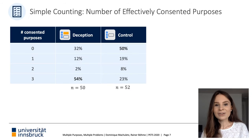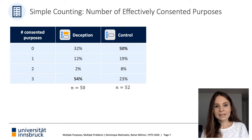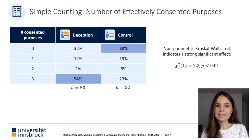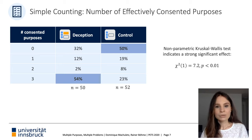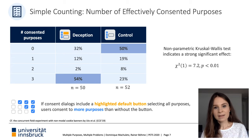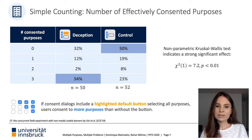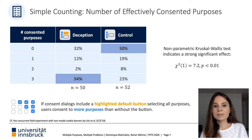For measurements, we counted the number of consented purposes and assigned a score from 0 to 3 based on selected checkboxes, then compared the deception group with the control group. We find that the effect of the deceptive default button is significant in terms of number of choices. Participants in the treatment group were significantly more likely to consent to all three purposes than the control group. Thus, consent dialogs with a highlighted default button lead users to effectively consent to more purposes than without the button.